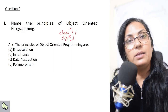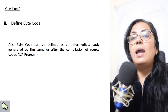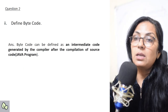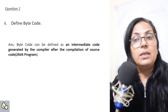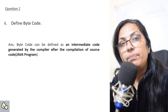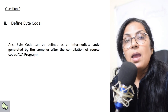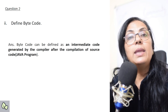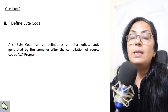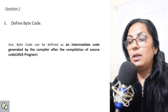The next question: 'Define bytecode.' Bytecode can be defined as an intermediate code generated by the compiler after the compilation of the source code of a Java program. Java is a language which uses both compiler as well as interpreter. After compilation, the code we get before interpretation is termed as bytecode, and it is in binary form. The question can also be asked: 'What is the form of bytecode?' — answer: it is in binary form.